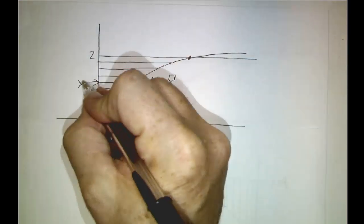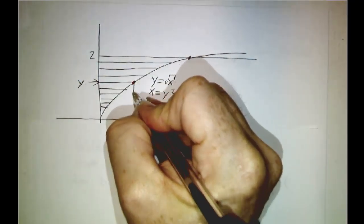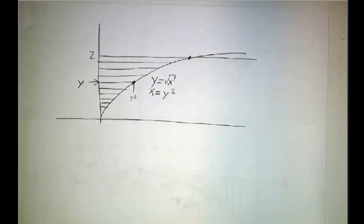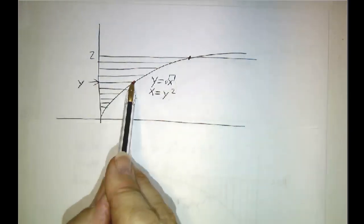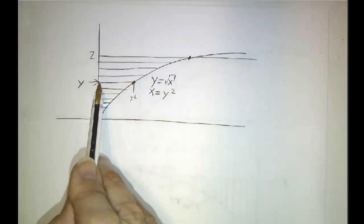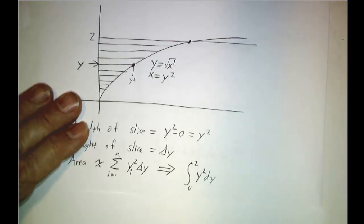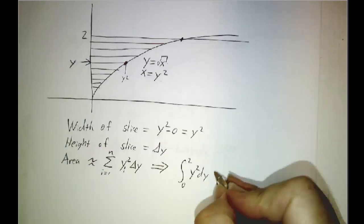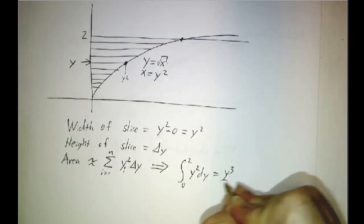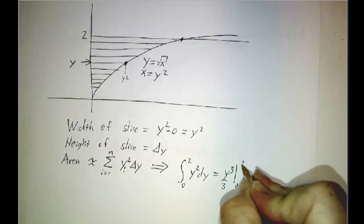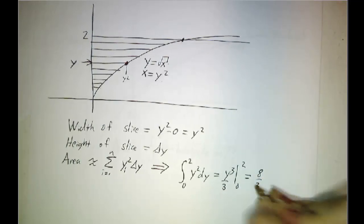So if this value is y, then this is y squared. And so the width is y squared minus 0, and that's y squared. The height is delta y. We add all the slices together, and that becomes an integral. The integral of y squared dy. And not only is that an integral, that's a darn easy integral. That just gives you y cubed over 3, evaluated at 0 and at 2, and that's 8 thirds.